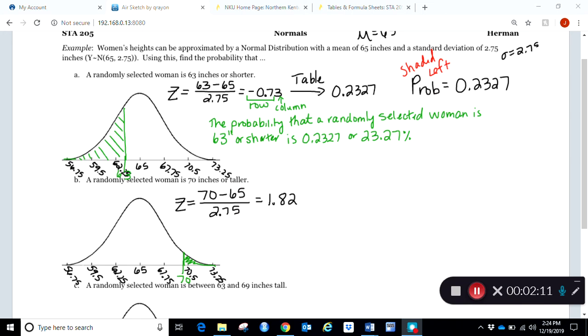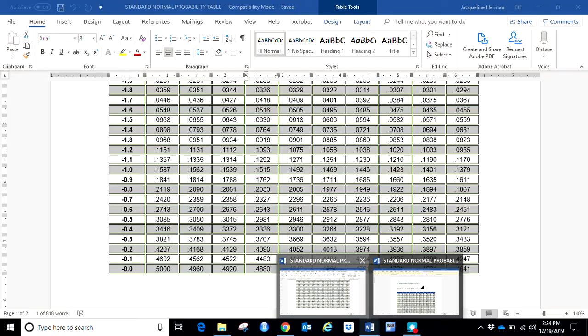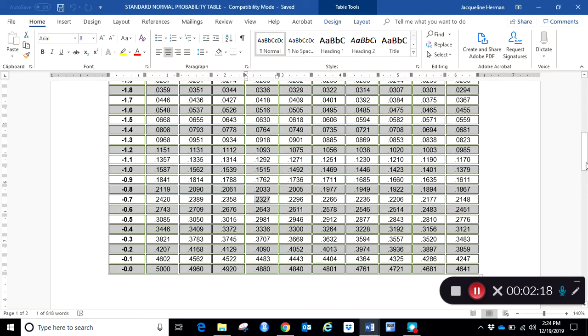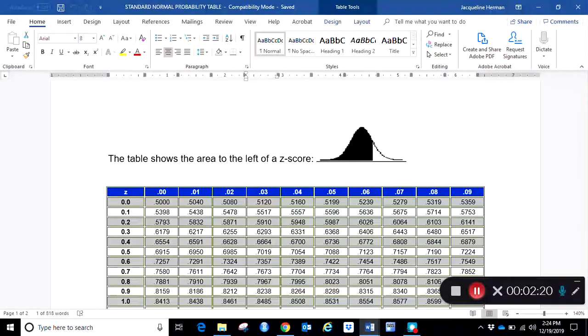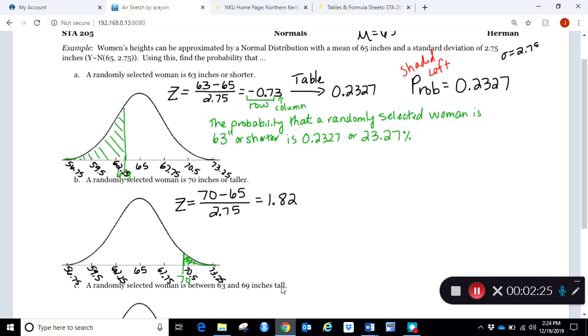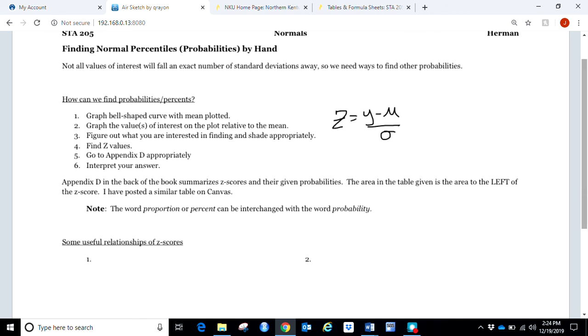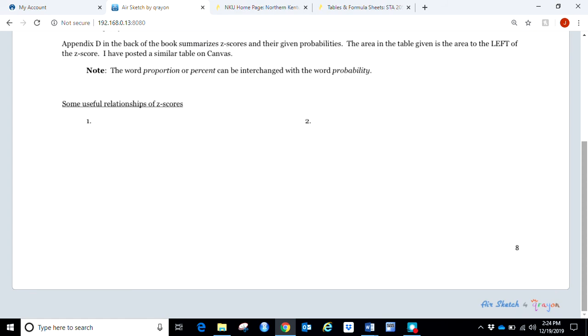Now let's talk about what we're going to need to do here. The next step is to go to our table. Recall again that our table always reads to the left of a value. However, what do we want? We want to the right of the value. So how are we going to do this? This is where our first rule of the relationships between z-scores is going to be useful. So this is going to be the shaded right rule.